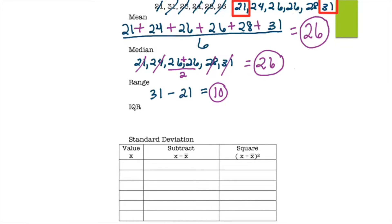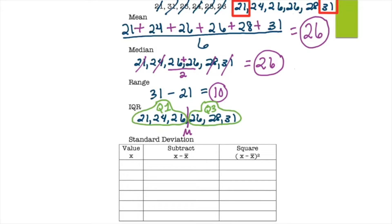For the IQR, list the data from least to greatest and remove the median. Find the median of quartile 1 (left side), which is 24, and the median of quartile 3 (right side), which is 28. To find the IQR, subtract quartile 1 from quartile 3: 28 minus 24 equals 4.